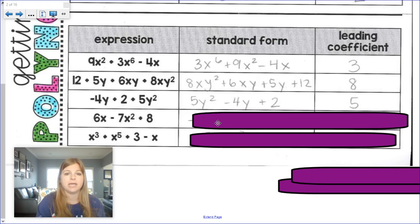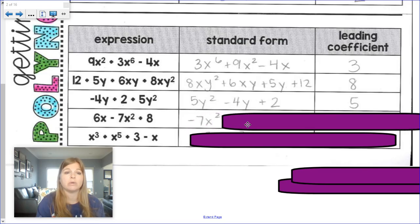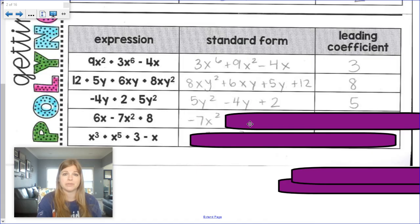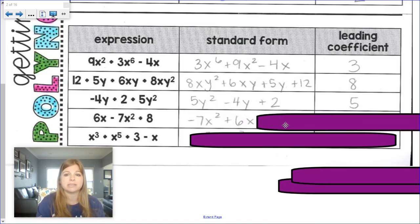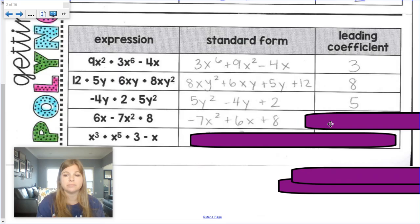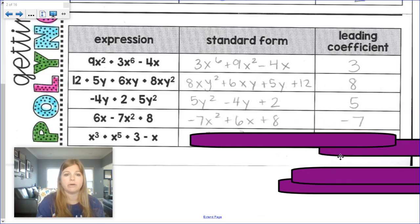Highest degree? Negative 7x squared. Don't forget about that minus sign in front. That's really a negative. Plus 6x plus 8. Leading coefficient would be negative 7.